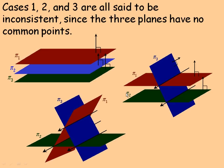Cases one, two, and three are all said to be inconsistent systems, since the three planes have no common points whatsoever — there is no point that lies on all three planes simultaneously.